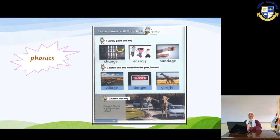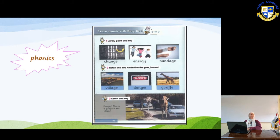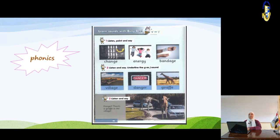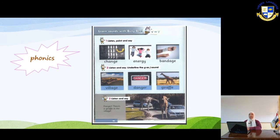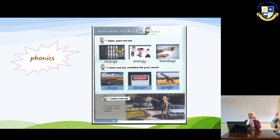In the picture for 'change,' you see arrows all going in the same direction except one yellow arrow going a different way — it changed direction: change. In the next picture, three children are playing and full of energy — very active. That is 'energy.'